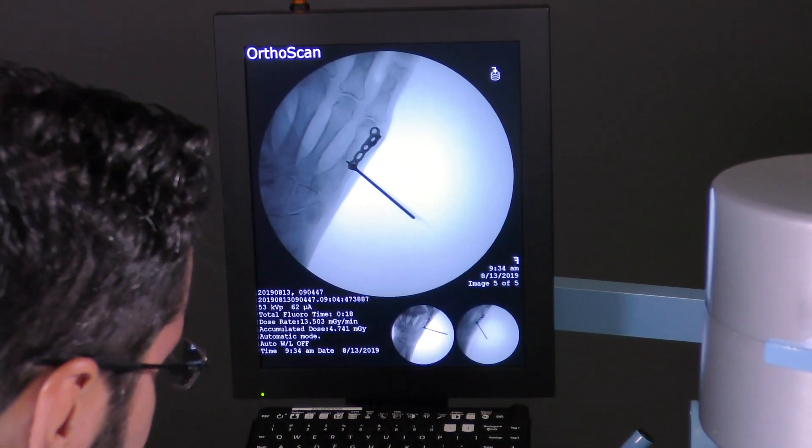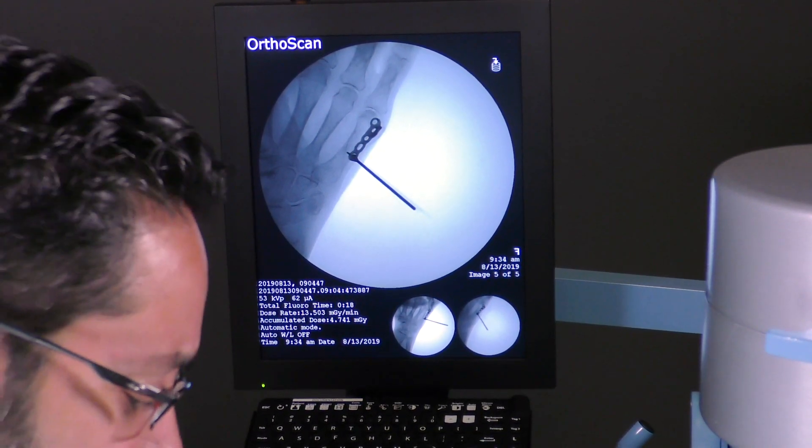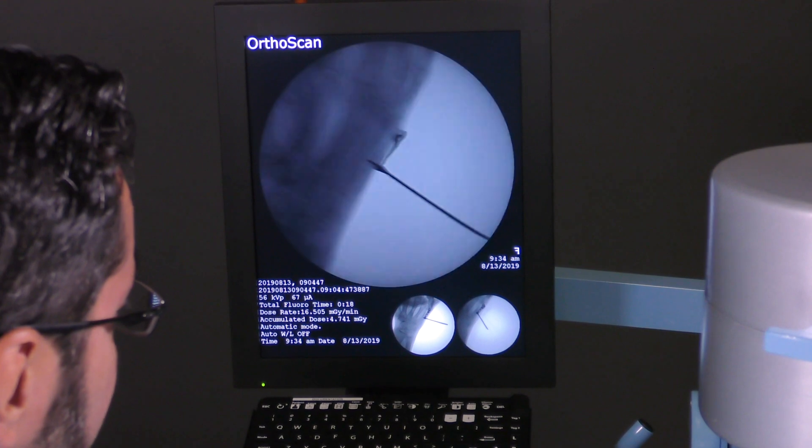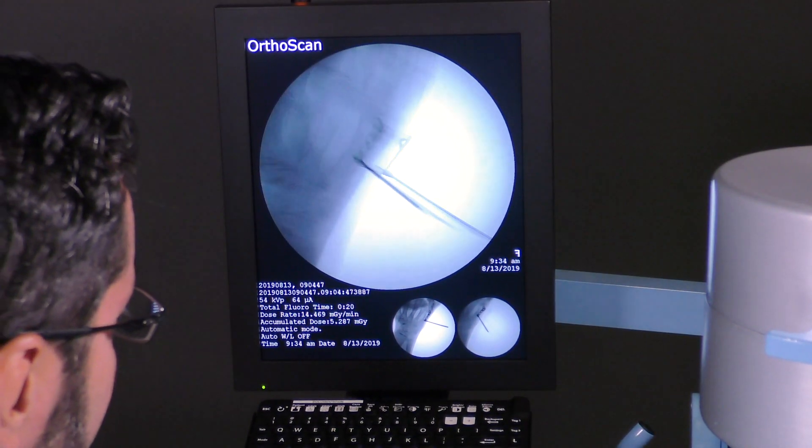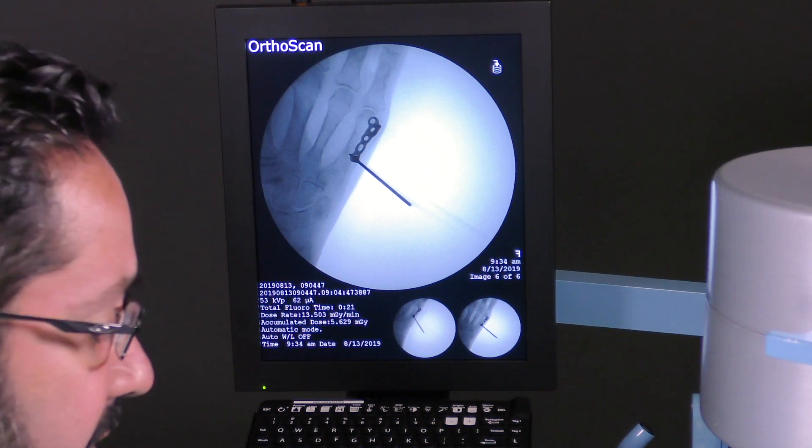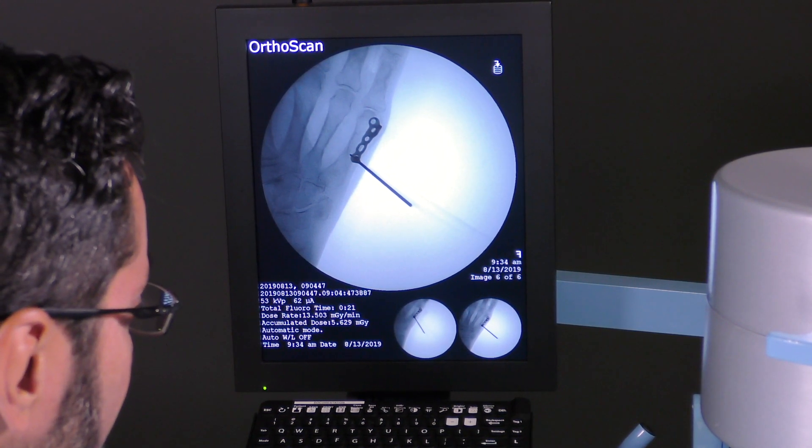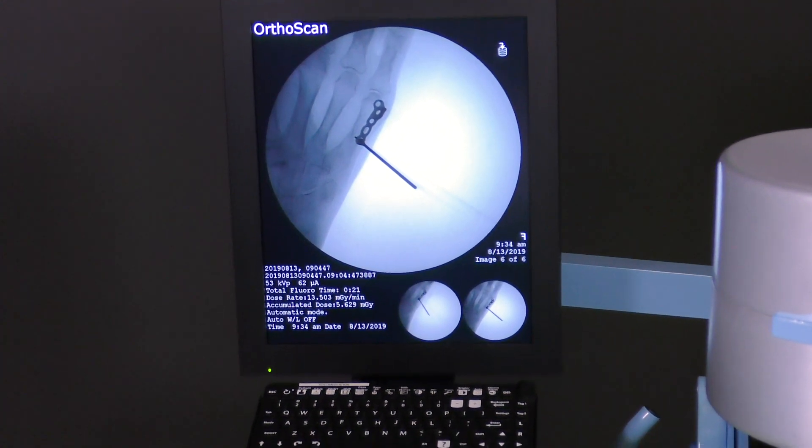If you look at this, the plate's probably a touch distal, maybe two or three millimeters more distal than I would like. So that's fine. What I can do now is I can reposition this all together, and then re-image it. Or alternatively, I can just put a screw in the oblong hole in the proximal aspect of it, and then slide the plate back.